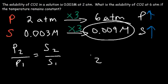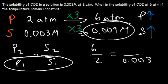P1 is 2. P2 is 6. If P1 is 2, S1 has to be 0.003. The units, I mean the values have to match. S1 corresponds to P1.